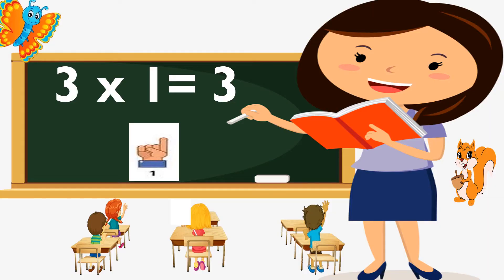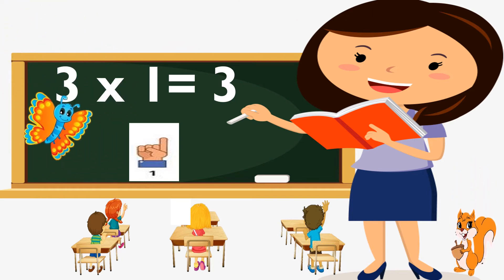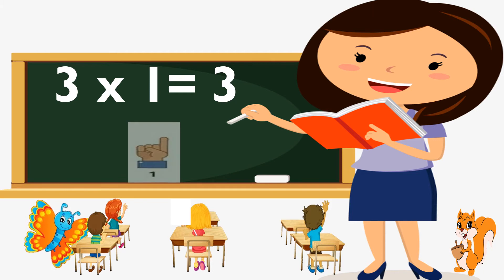So let us start learning the table of three in a very easy way. Three ones are three, three ones are three.